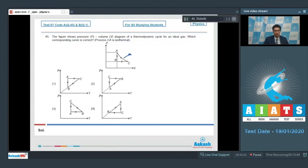Dear students, CA is given to be isothermal. We can see that the process BC is isobaric as the pressure remains constant, and AB is isochoric as the volume remains constant.